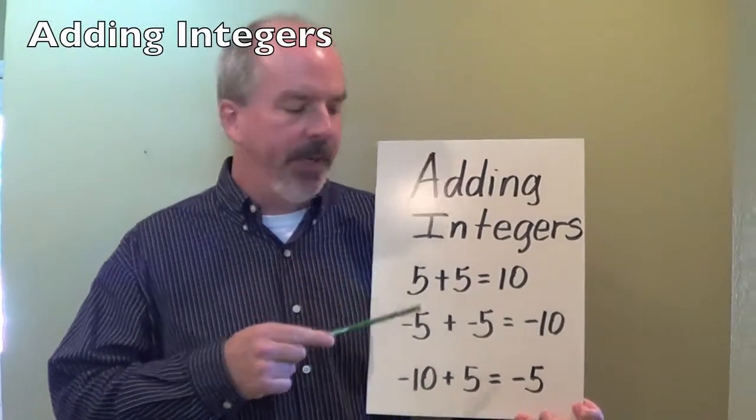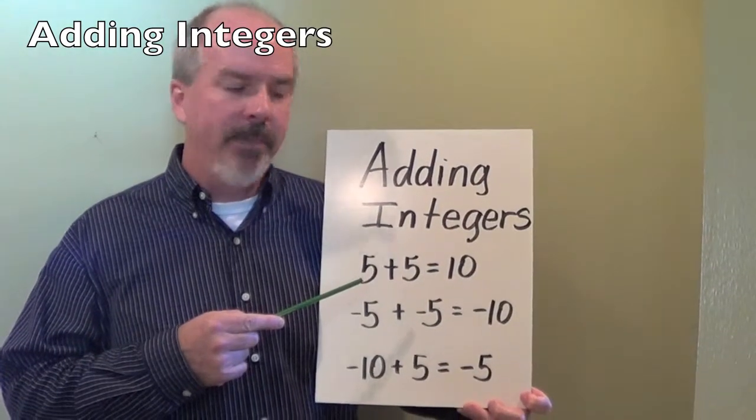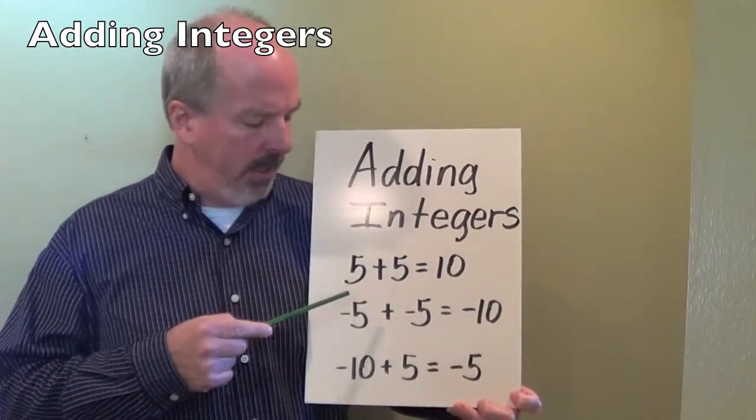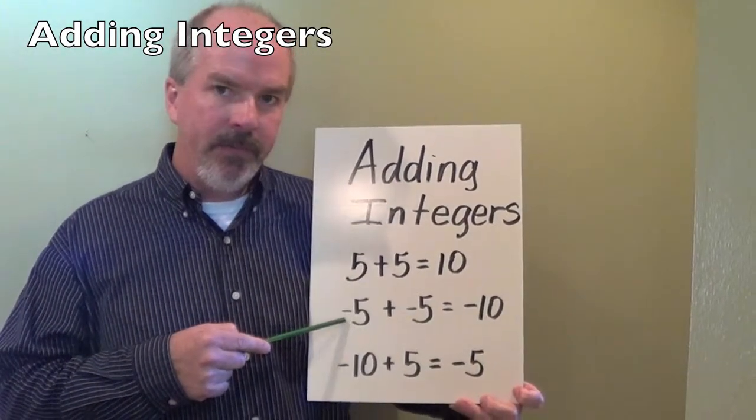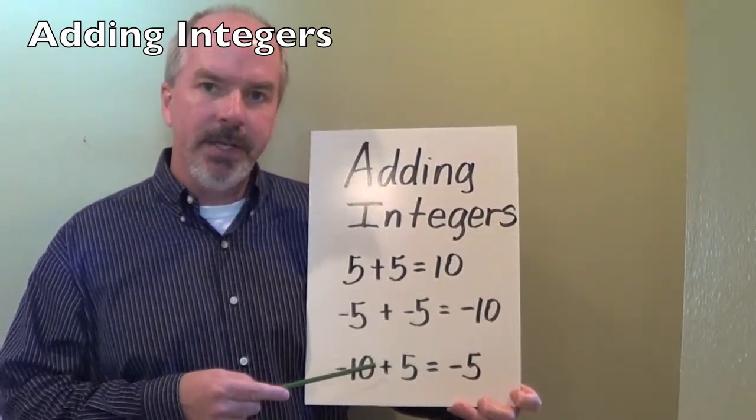Adding integers. Three types. Adding integers where the signs are the same positive, the signs are the same negative, and adding where the signs are different. We're going to discuss those.